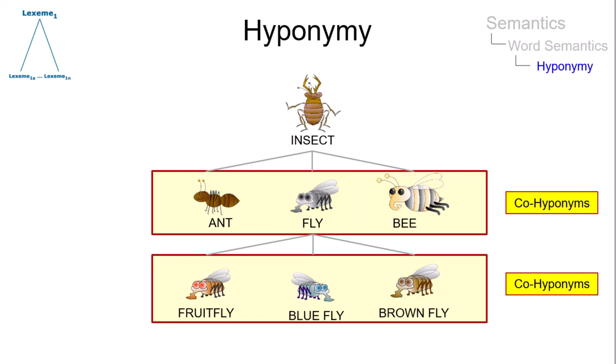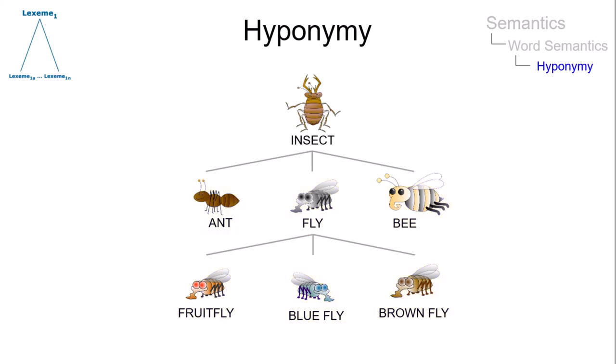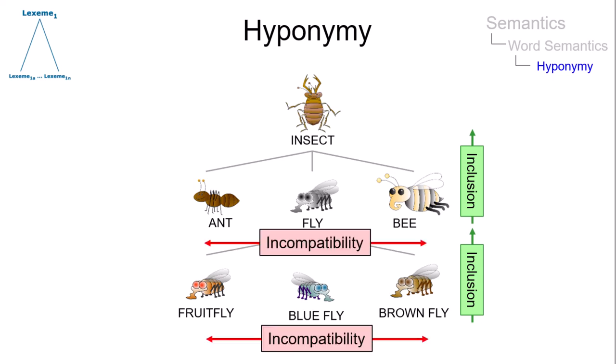Hyponyms of the same superordinate term are referred to as co-hyponyms. Whereas their vertical relationship with a hyperonym is one of inclusion — for example, fly includes insect — their horizontal relationship with each other is one of incompatibility.